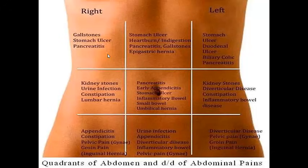Starting with the right hypochondriac region, it's going to have gallstones because the gallbladder is present in this area, stomach ulcers, and pancreatitis because the head of the pancreas is here. The epigastric region anatomically contains the esophagus and stomach, so stomach ulcers and heartburn are common here, along with pancreatitis and epigastric hernia.